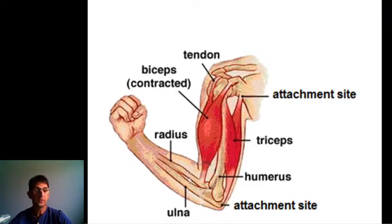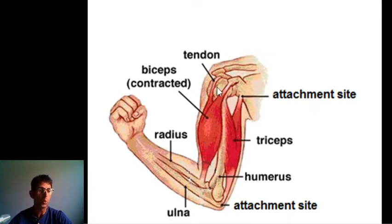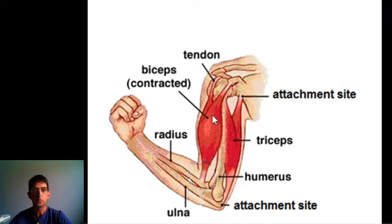They pull — like in this one, the forearm is pulled towards the shoulder and then he bends at the elbow. So he's only able to contract; he is not able to get longer by itself.